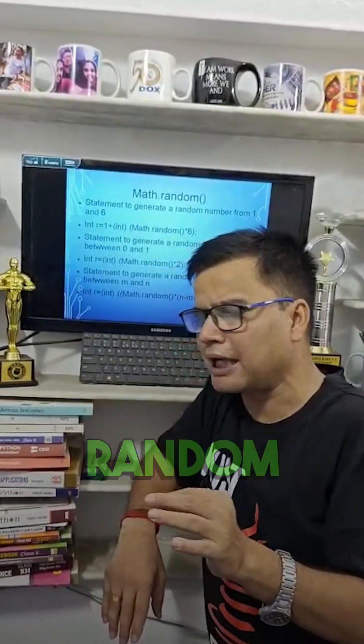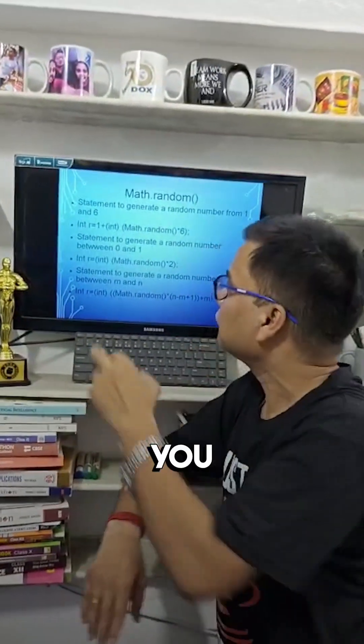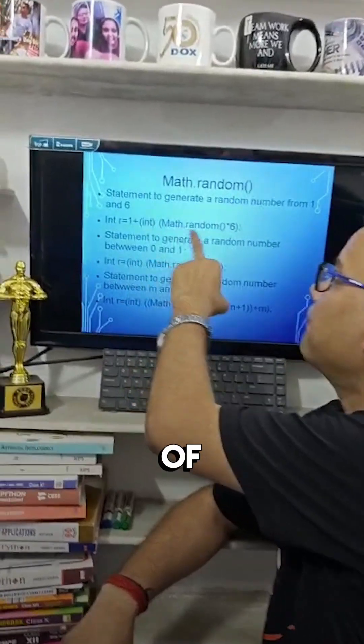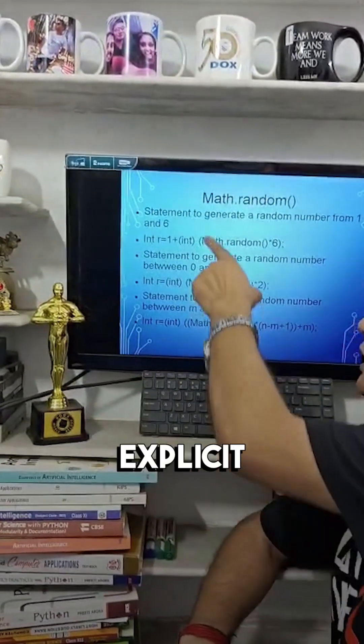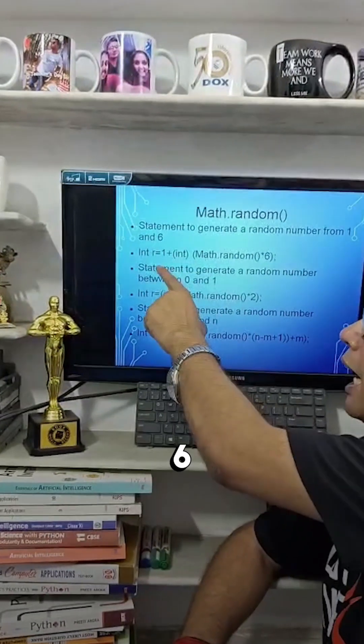If we want to generate a random number between 1 and 6, what could you do? 1 plus int of Math.random into 6. This converts the explicit conversion Math.random into 6, and 1 plus it is.